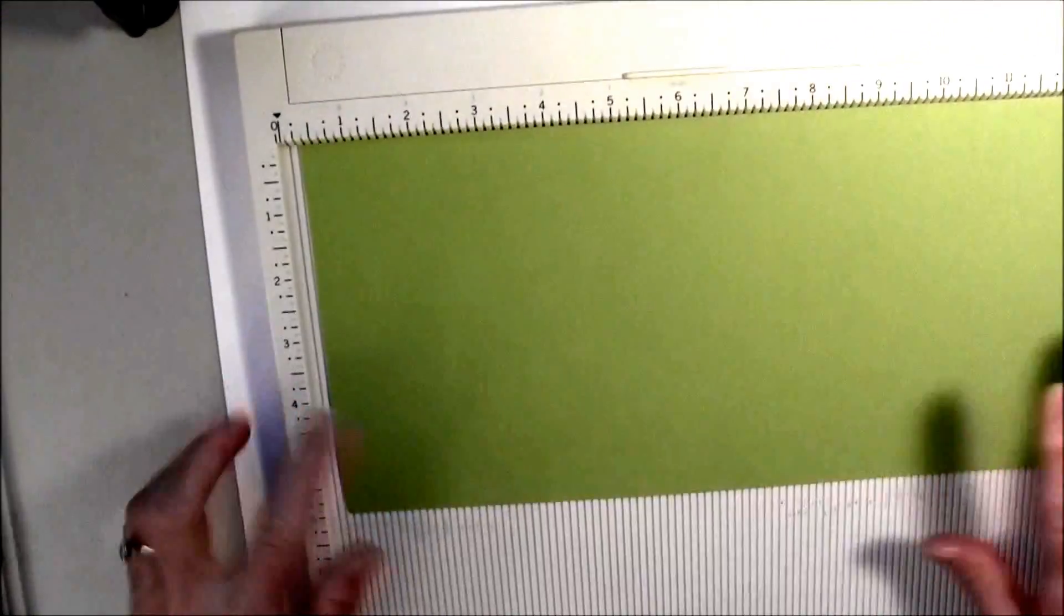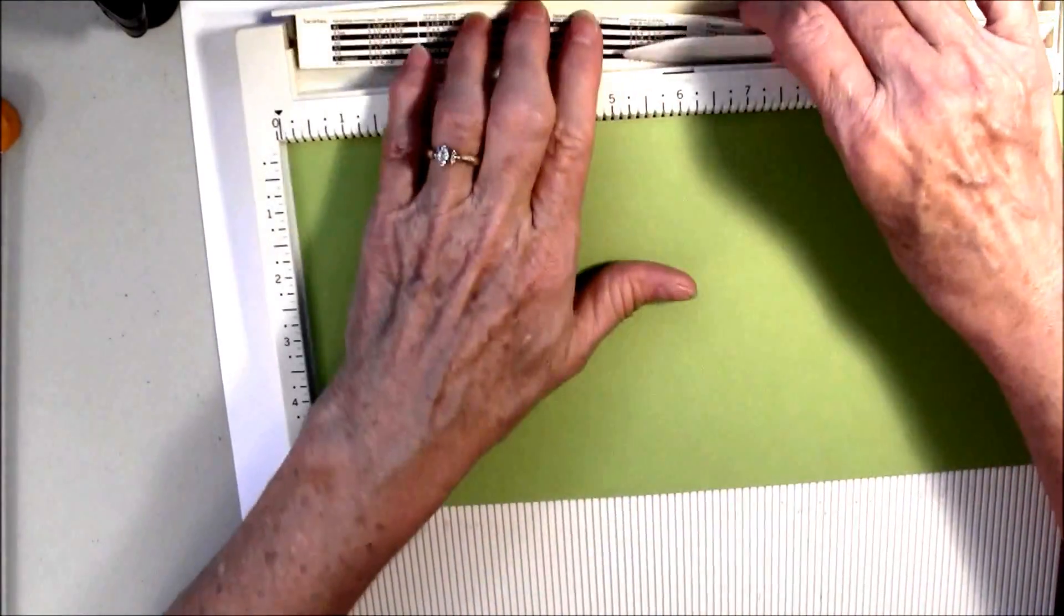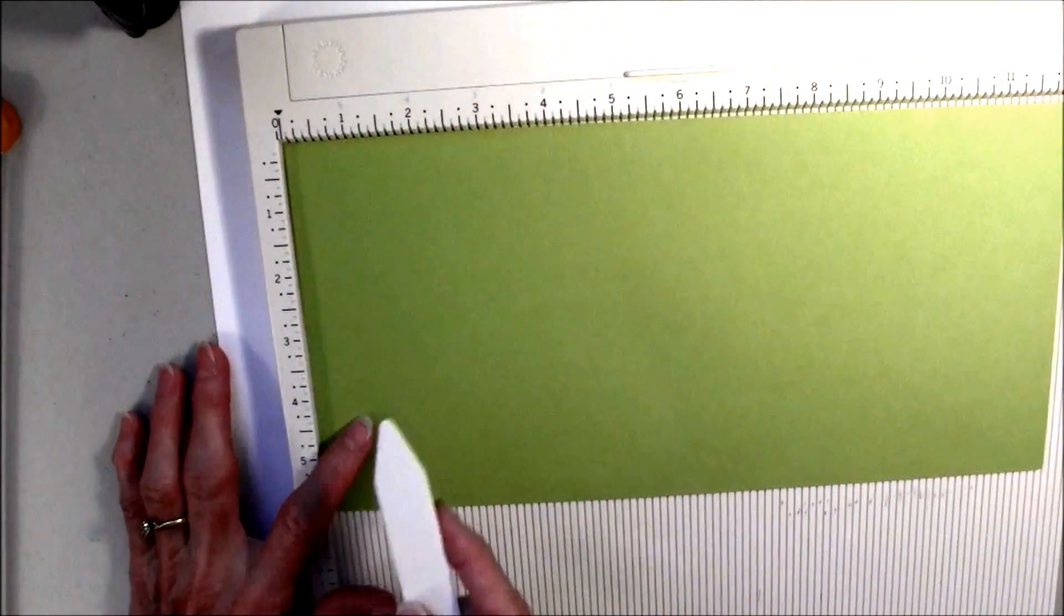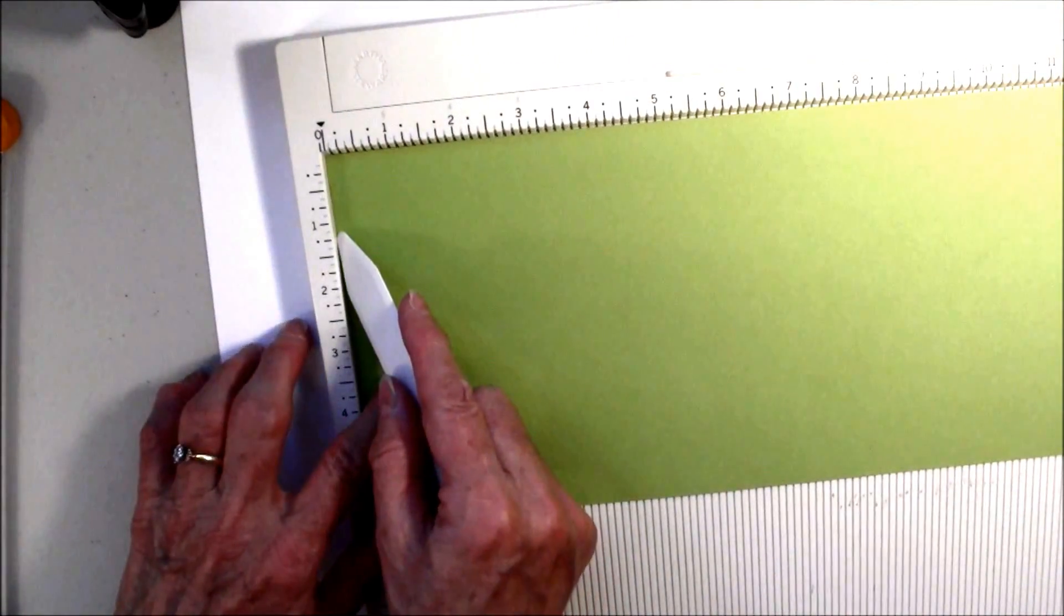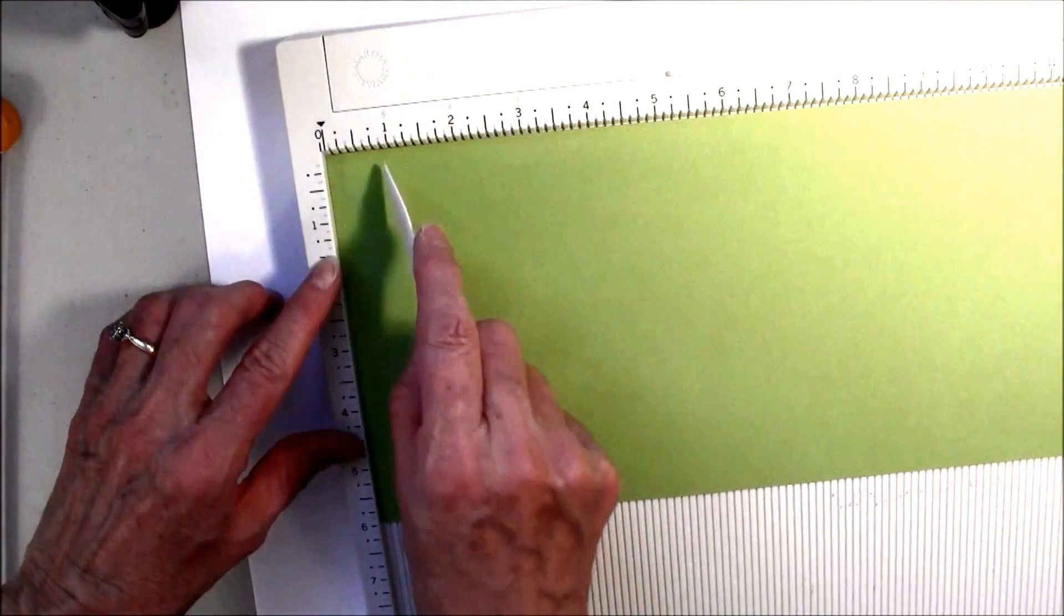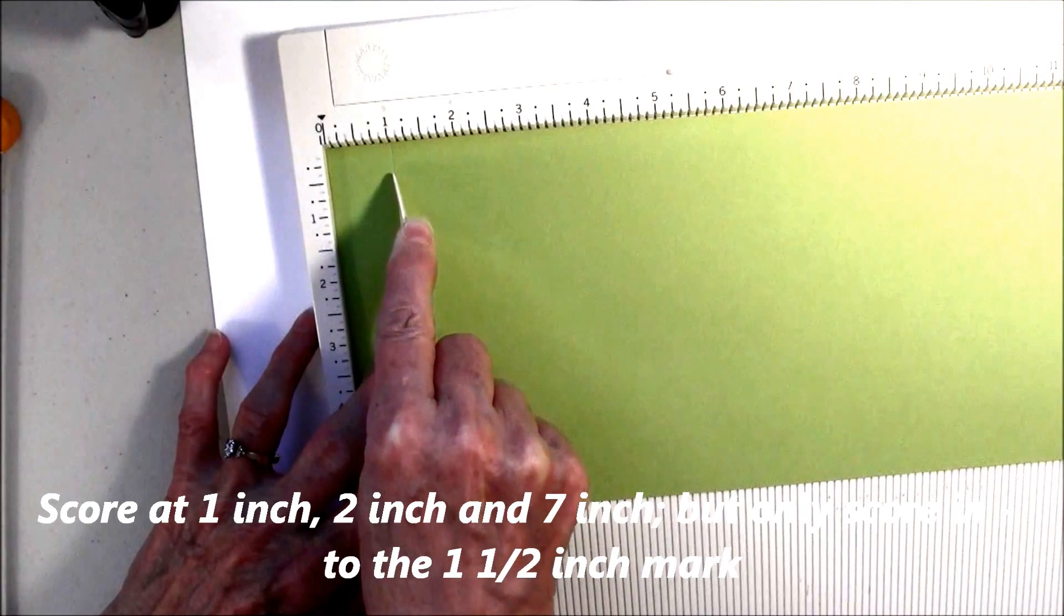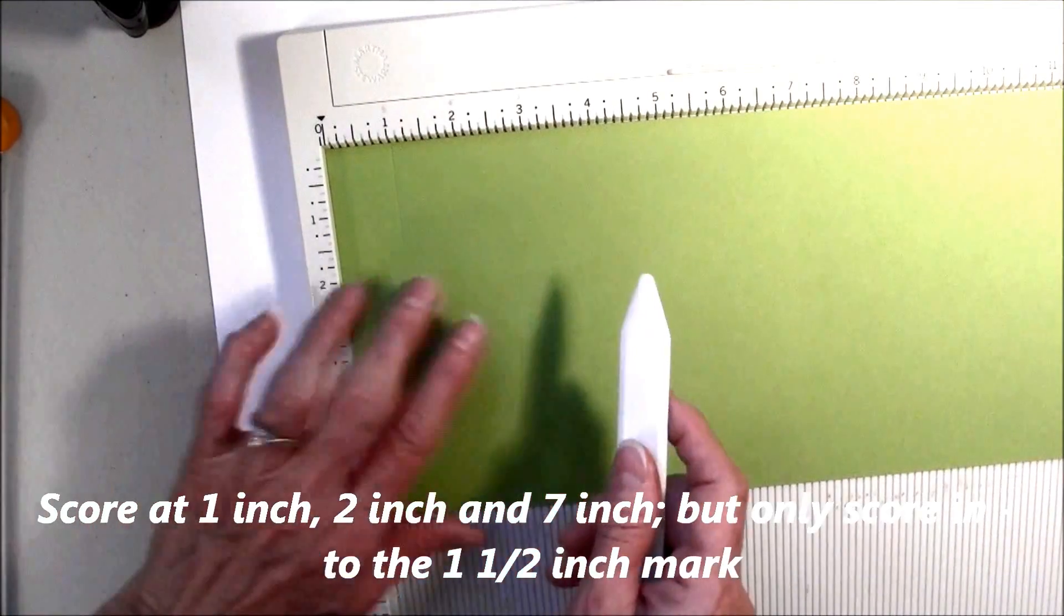The first thing you do is you will get your scoring board out. And you're going to score, for this one you only have to score on one side. So, you're going to score, and you're only going to score into 1½ inches in. So, you want to make sure you don't score further than that.